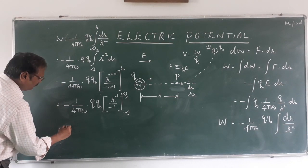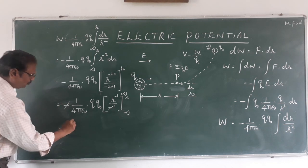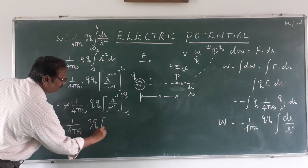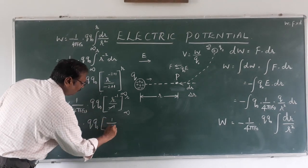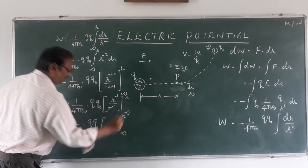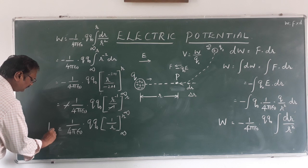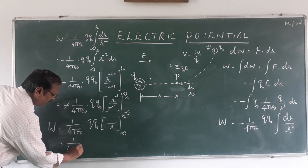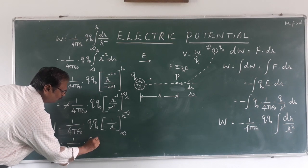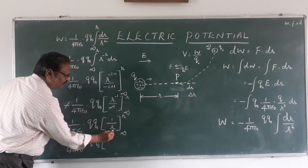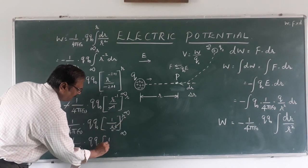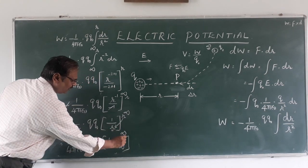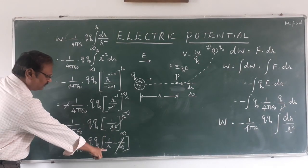Evaluating the limits, we take the upper limit value first: 1 upon r, then subtract the lower limit value: 1 upon infinity. Since 1 upon infinity equals 0, we are left with just 1 upon r.